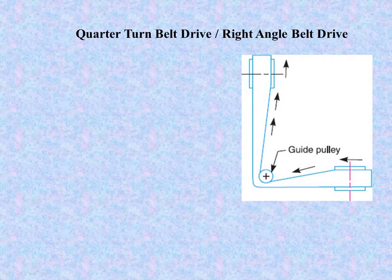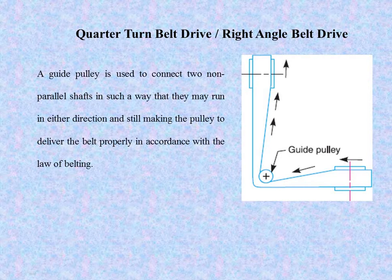Today we are going to see another type of belt drive — the quarter turn belt drive, that is the right angle belt drive. This is what a quarter turn or right angle belt drive. You can see the right angle here, and this is what a guide pulley. A guide pulley is used to connect two non-parallel shafts in such a way that they may run in either direction while still delivering the belt properly in accordance with the law of belting.